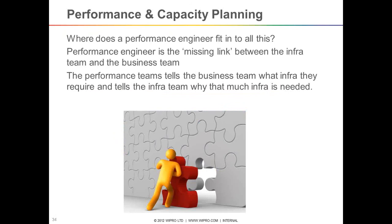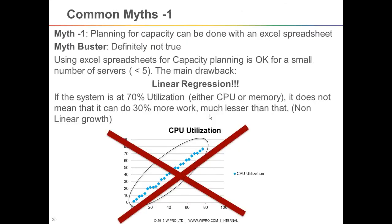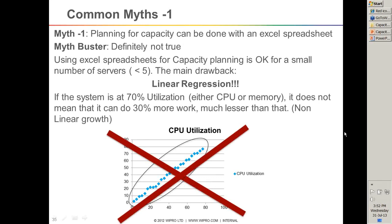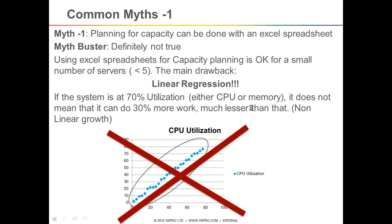Where does the performance engineer fit in all this? They are the missing link between the infrastructure team and the business team. Performance engineers know the business and know the infrastructure behavior in terms of different workloads, but they can only communicate to the business team by framing things in terms of infrastructure impact on load. A very common myth is that capacity planning can be done with an Excel spreadsheet — which 80% of capacity planners do today. They use the trend function for straightforward linear extrapolation, but cannot account for the fact that headroom is always very small and the growth is never truly linear — there is always a curve.